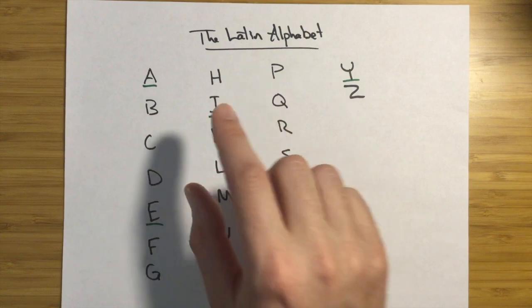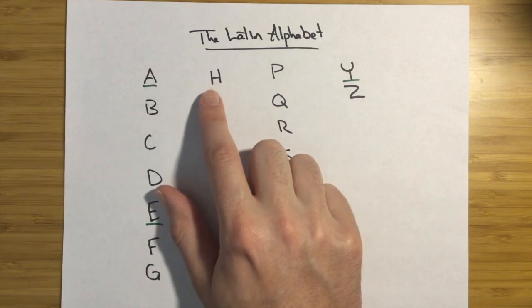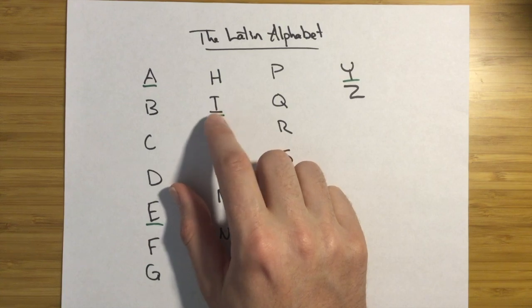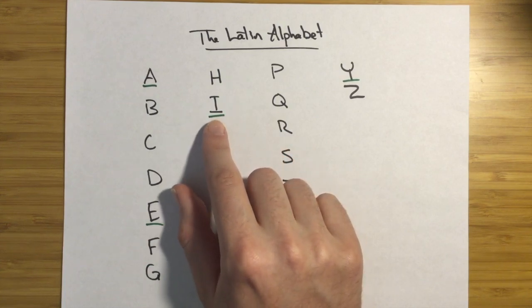H makes a house sound. Wheelock's Latin says to make it less pronounced. Feel free to do that if you wish. I makes an E sound. Long A is E, short A is E.